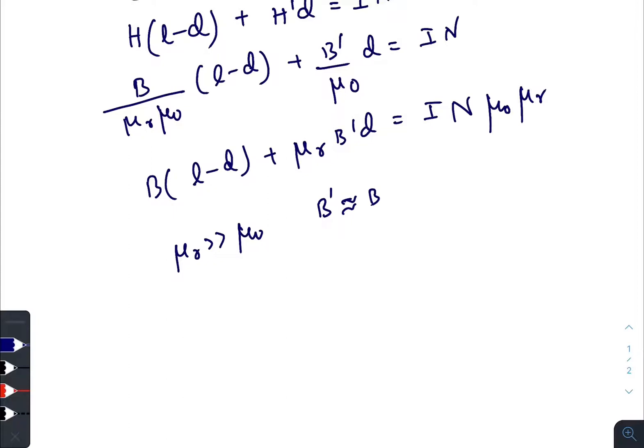B into l plus (mu r minus 1) into d equals to mu r mu naught N times I. And the final solution will be mu r mu naught into I divided by (mu r minus 1) into d.